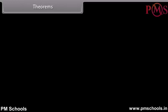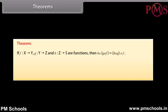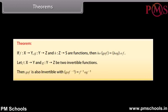Theorems: If functions f from X to Y, g from Y to Z, and h from Z to S are functions, then h∘(g∘f) = (h∘g)∘f. If f from X to Y and g from Y to Z are two invertible functions, then g∘f is also invertible with (g∘f)⁻¹ = f⁻¹∘g⁻¹.